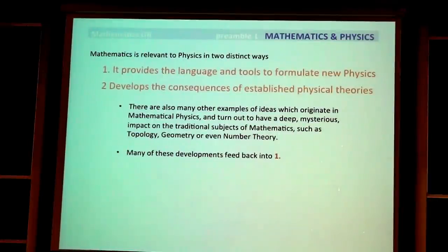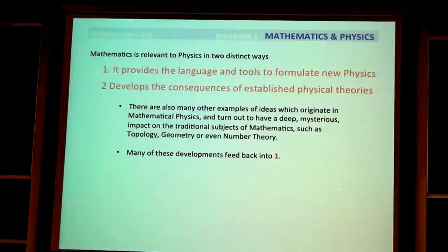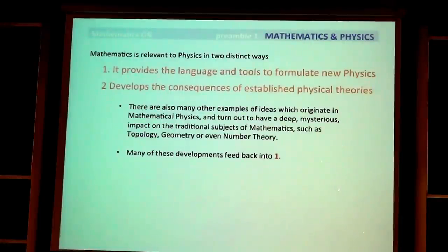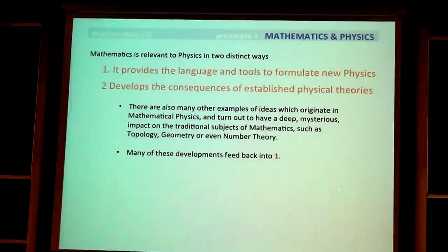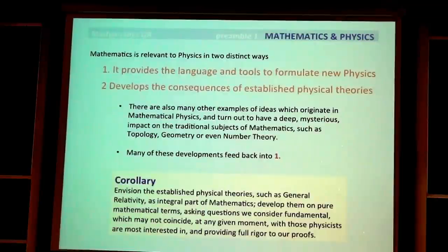An interesting remark is that many of these developments, which come from physics, go back into mathematics. In fact, I think this is probably the deepest way in which mathematics influences physics — not necessarily directly, because physicists are better at taking things from mathematics and using them, but indirectly, by developing the consequences of established physical theories. In that sense I view mathematical general relativity.